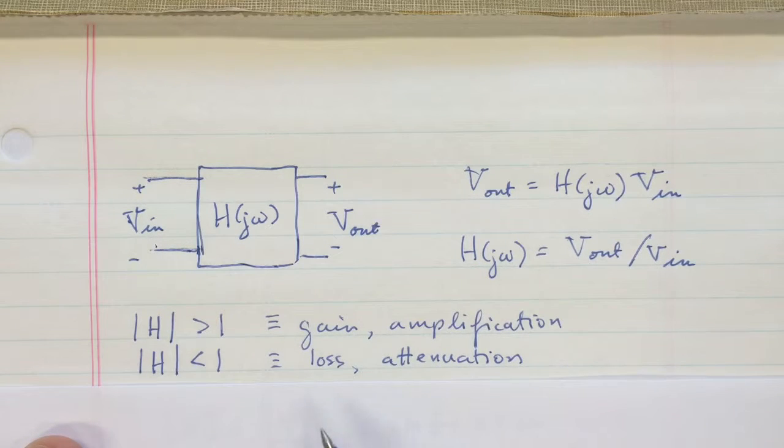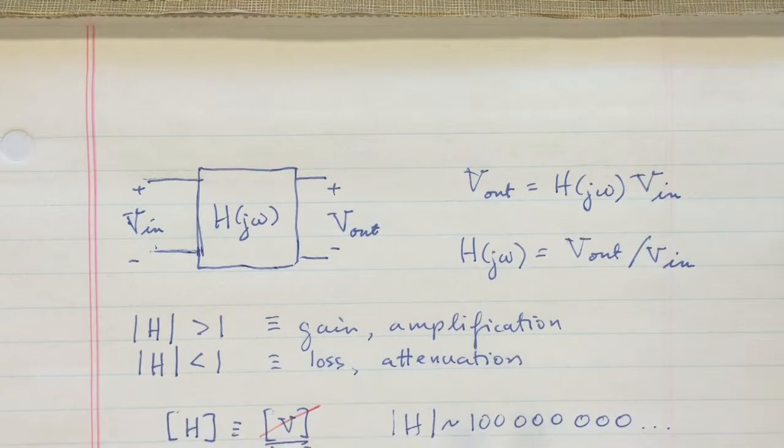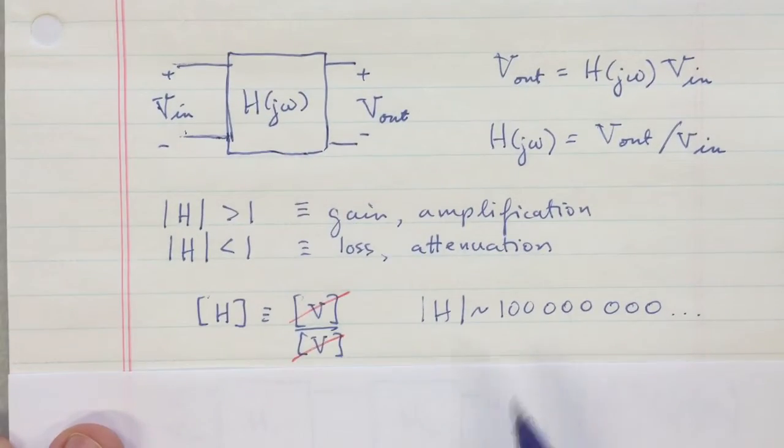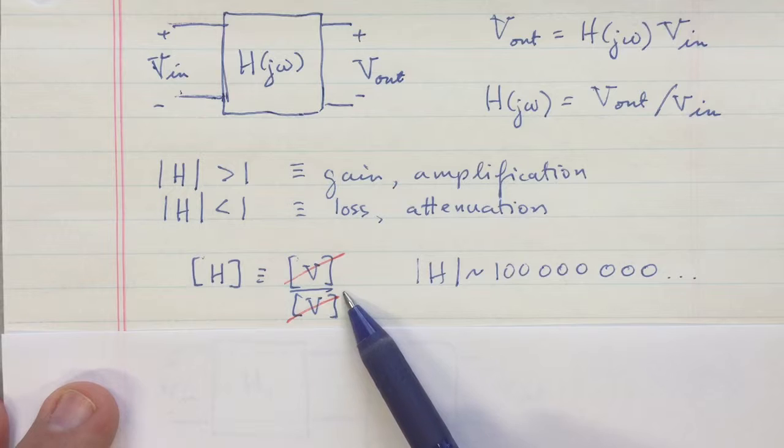And this magnitude of H is going to have units of a ratio of volts, so its units are going to be in volts per volt. The problem with that is that somebody might come along and cancel the volts on the top and bottom, and you're left with no units, so you're kind of left with no indication that it was something interesting to begin with.